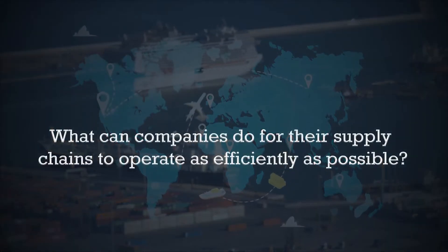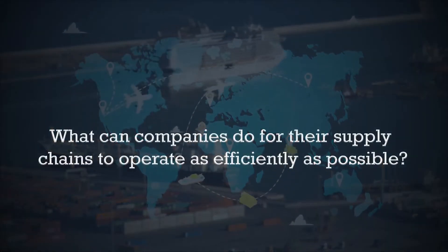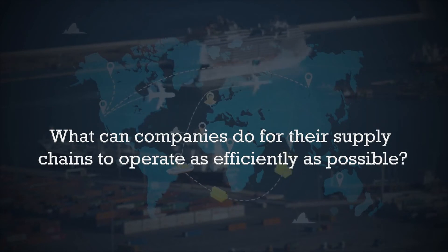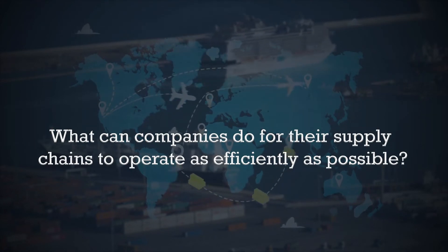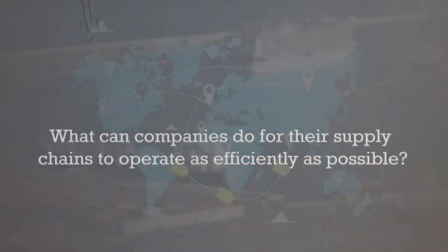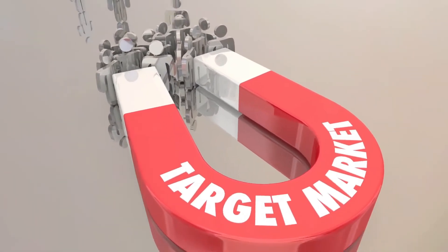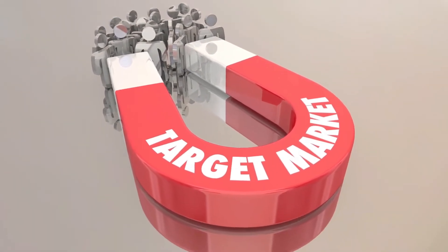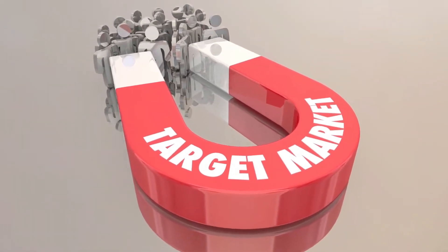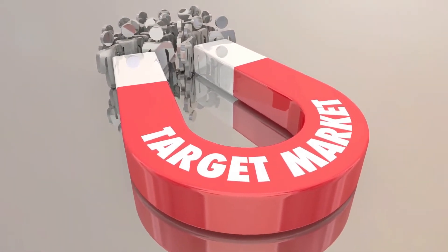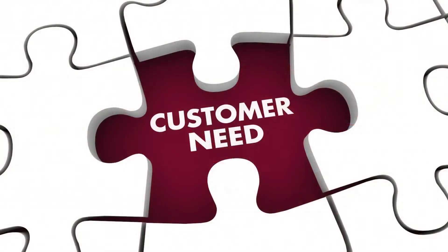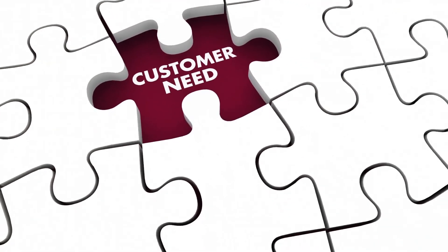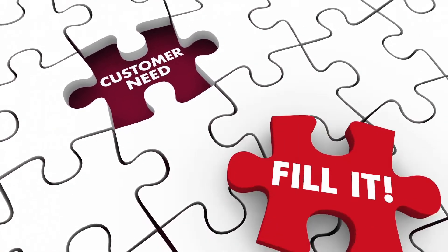So what can companies do for their supply chains to operate as efficiently as possible? Businesses need to understand their target customers. They also need to realize that they have different types of customers, each with their own set of requirements and expectations.